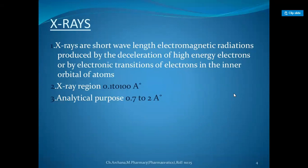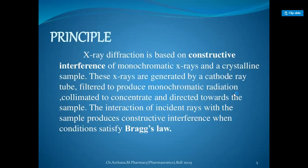X-rays are short wavelength electromagnetic radiations produced by the deceleration of high energy electrons or by electronic transitions of electrons in the inner orbitals of atoms. The X-ray range is 0.1 Ångström, and for analytical purposes it is 0.7 to 2 Ångströms.